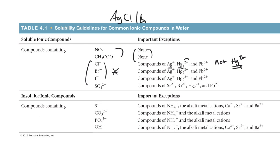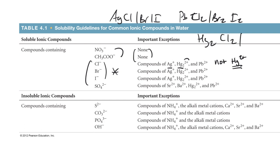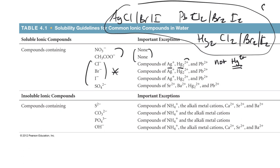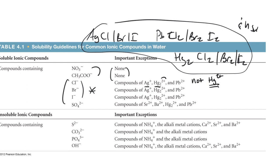Those insoluble compounds are AgCl, AgBr, AgI; PbCl₂, PbBr₂, PbI₂; and Hg₂Cl₂, Hg₂Br₂, Hg₂I₂ — all insoluble in water. Insoluble means they don't dissolve in water, so AgCl in water would just be AgCl solid at the bottom of the test tube. It's important to note that for silver and lead, Ag+ and Pb²⁺ are the only common cations of those elements seen in ordinary aqueous solutions.